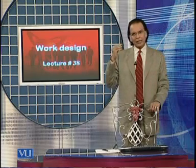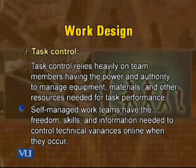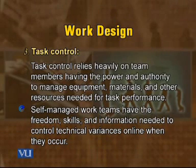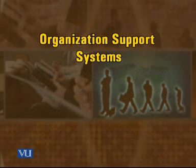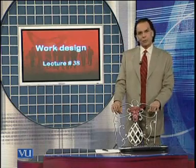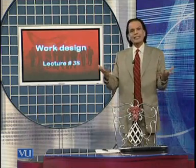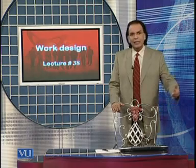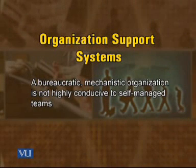Task control relies heavily on team members having the power and authority to manage equipment, materials, and other resources needed for task performance. They also receive timely information to adjust their quality and performance, and can observe and control technical variances — changing materials or operations as needed. The purpose is to align themselves with the goals and objectives of the organization. However, bureaucratic, mechanistic organizations are not highly conducive to self-managed teams — such teams are only prevalent in high-involvement organizations.